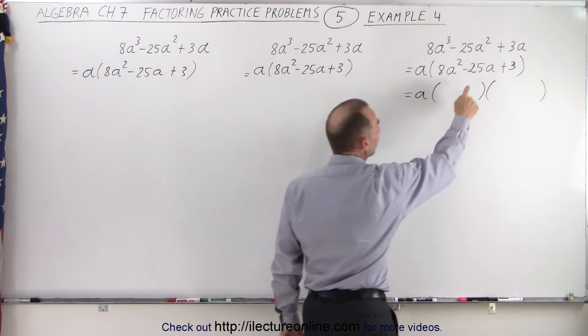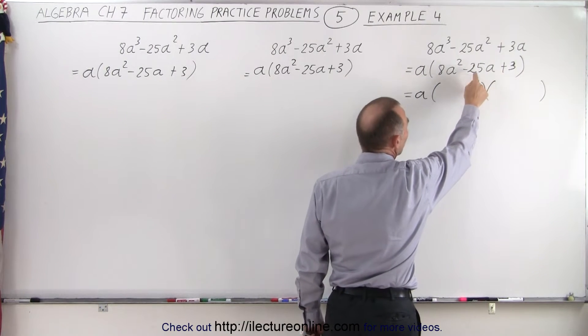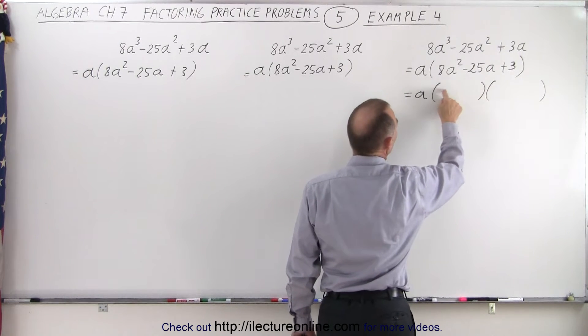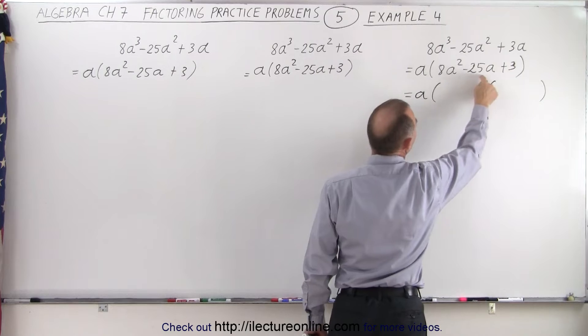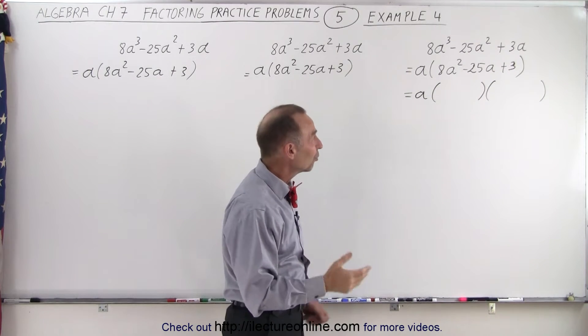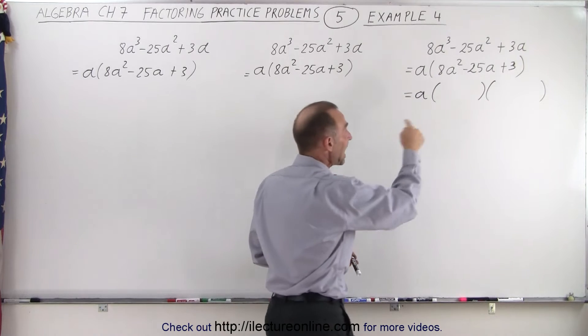But notice that the middle term is a fairly large number, minus 25a. And if we use small factors here, there's no way we'll ever get a very big middle term. So by just guessing, I would assume that starting out with 8a and a, we're most likely to end up with a really big middle term.